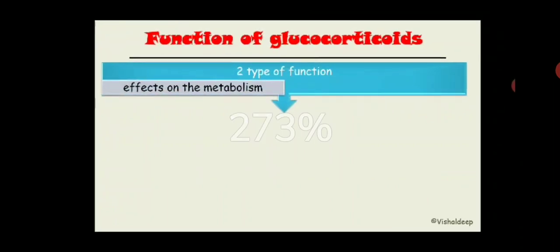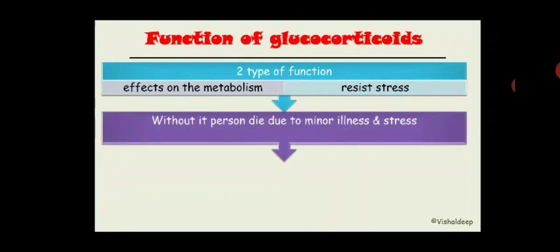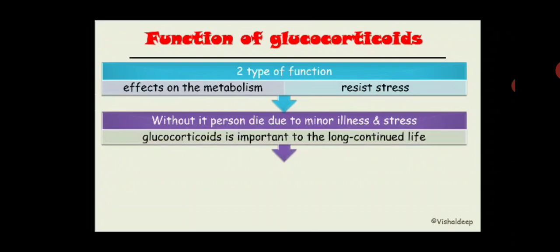Hello friends, in this lecture we are going to discuss the glucocorticoids. Glucocorticoid or cortisol has two types of functions. One type is related to metabolism, and the other is to resist or prevent stress. Without this stress resistance, a person will die due to very minor illness. So glucocorticoids are not essential for life, but important for long continued life. Mineralocorticoids, on the other hand, are essential just to maintain life.